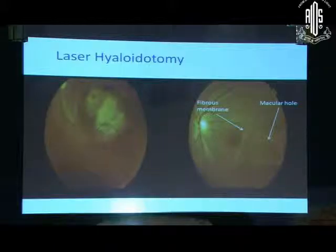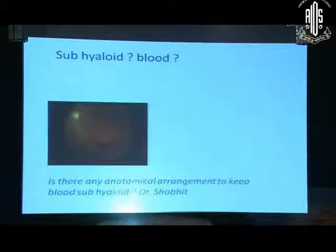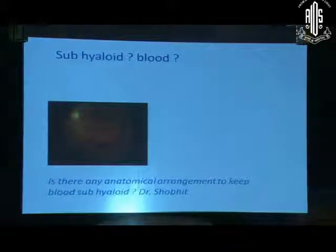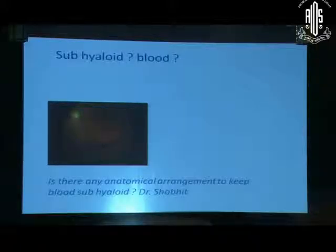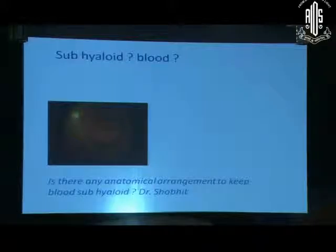Laser hyaloidotomy — I did it in this case and I produced a macular hole. I could never explain to myself any anatomical arrangement to contain blood between retina and vitreous in this defined form like a boat or circle, but they still call it sub-hyaloid bleeding. There is no reason that blood should remain sub-hyaloid — it must flow all over the retina.